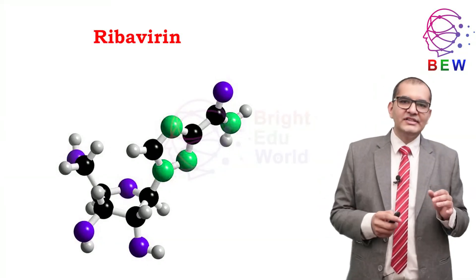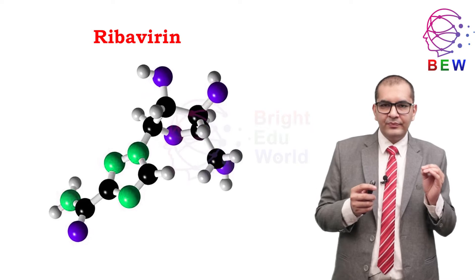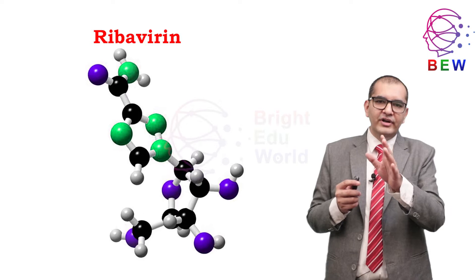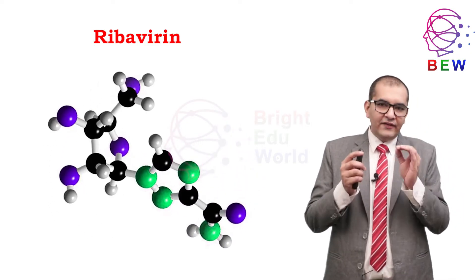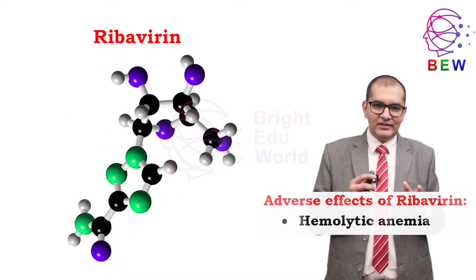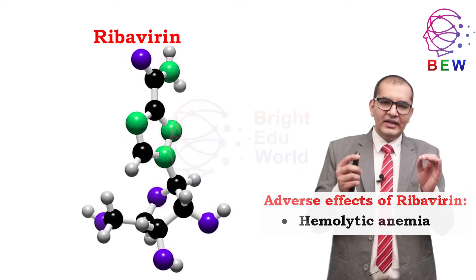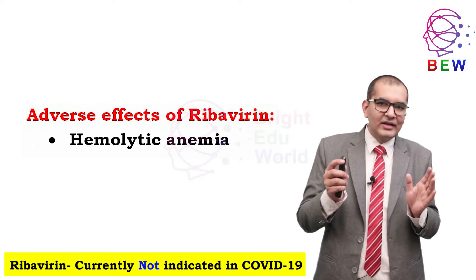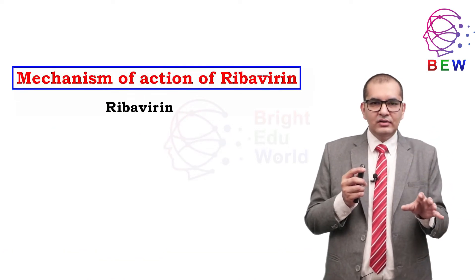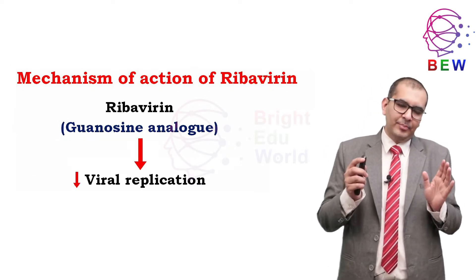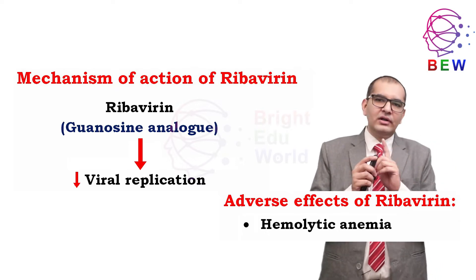The next drug is ribavirin, typically used for the treatment of HCV and RSV. It was initially considered as a possible therapy for COVID-19; however, subsequent studies showed that the doses required for effective antiviral activity may have potentially fatal adverse effects such as hemolytic anemia, limiting its clinical use. Ribavirin is not currently recommended for the treatment of COVID-19. Its mechanism is as a guanosine analog that interferes with viral replication.